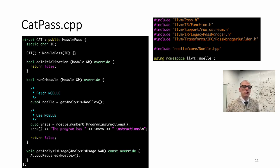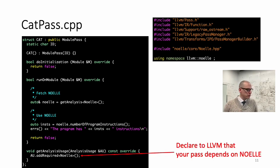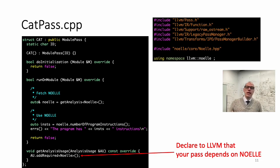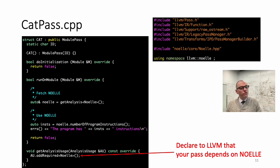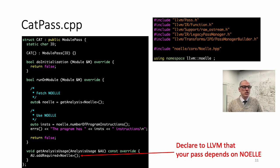As soon as you start the runOnModule, you first declare that your pass depends on another pass that we call Noel — this is provided by the NOEL infrastructure. From LLVM's point of view, NOEL is a set of passes, one of which is the Noel pass. Your pass that relies on NOEL API has to declare that dependency so the pass manager understands the dependencies between passes.